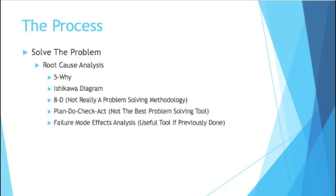The 5-why approach works best when you kind of know where the problem is headed. For more general areas where you're not sure what caused it, you can use a fishbone diagram, also known as an Ishikawa diagram. Typically, five or seven categories are used, and the rule of thumb is they start with M: machine, man (your workers), methods, measurement system, management, mother nature (environmental issues), and material — that's the seventh M. You go through these to figure out which area caused the problem.